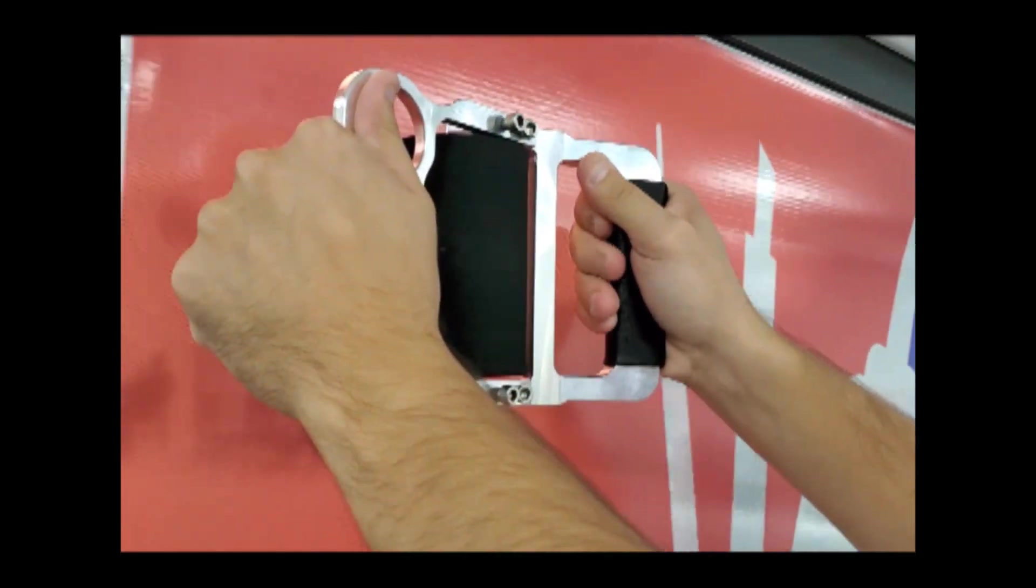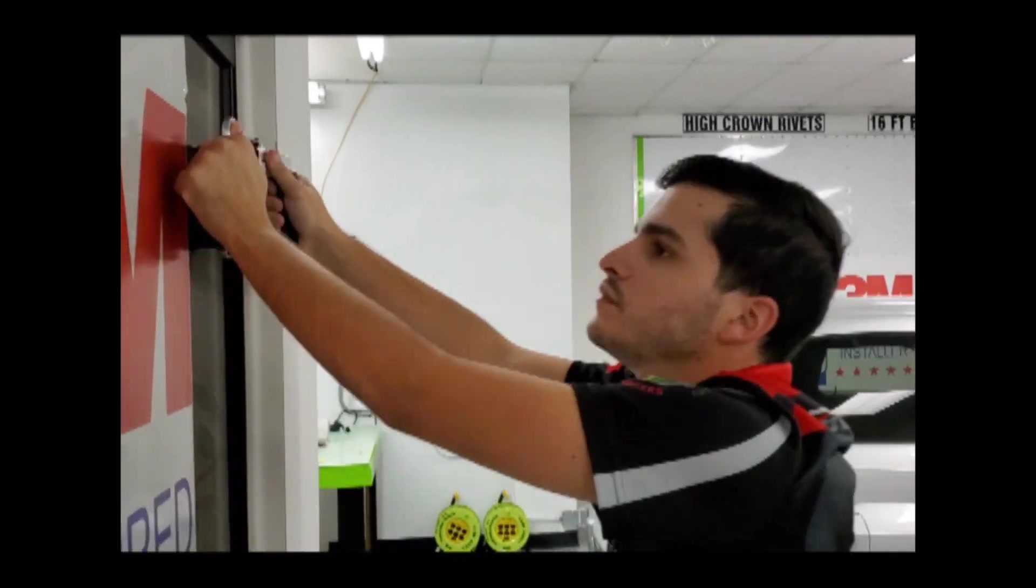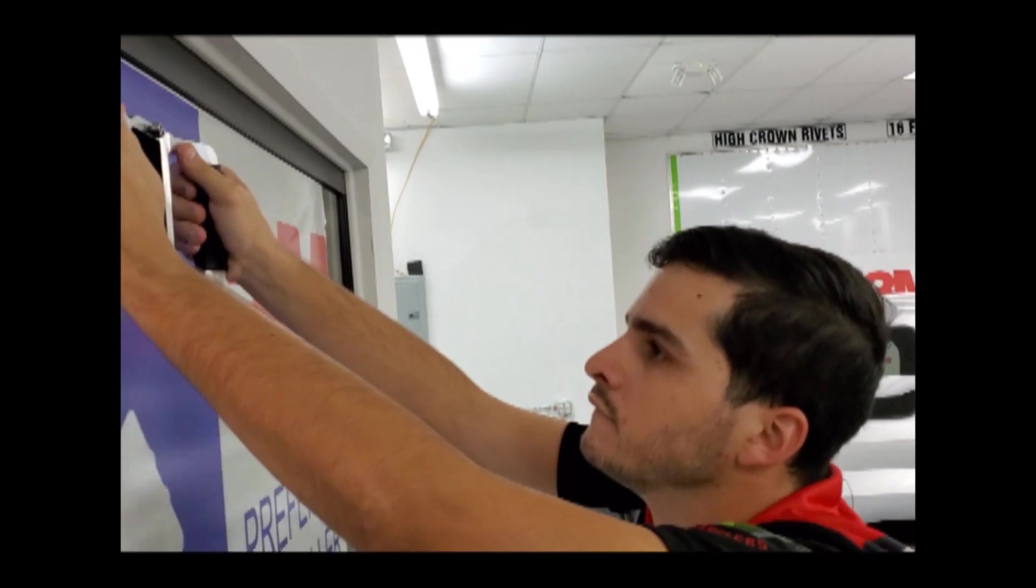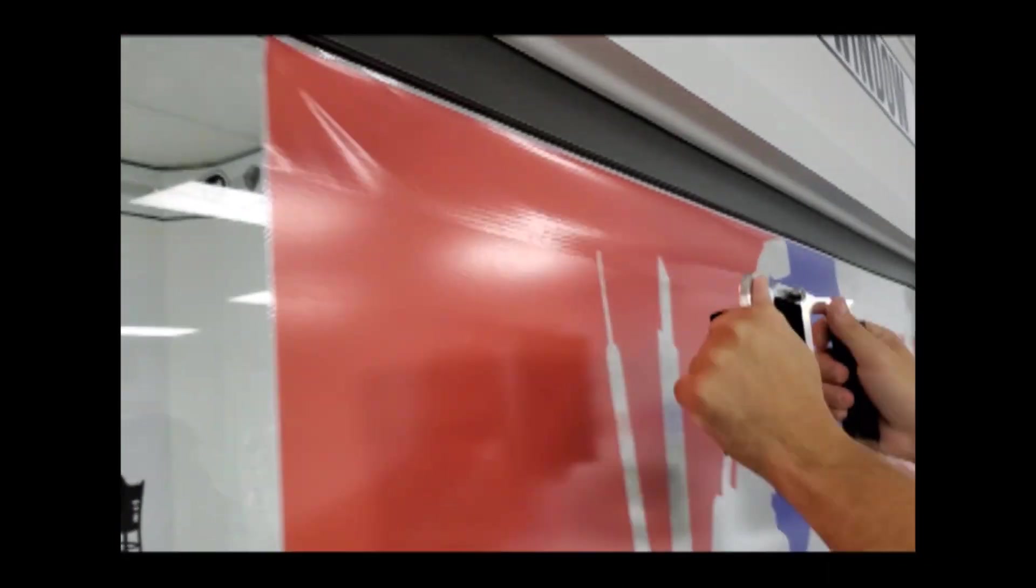Start rolling from the middle out and be sure to overlap by at least 50%. This will ensure the entire panel is installed correctly without leaving any air behind.